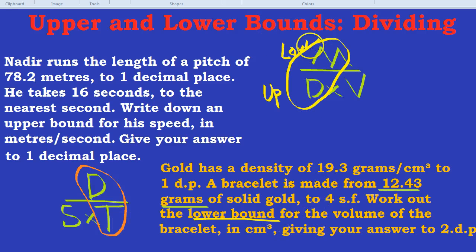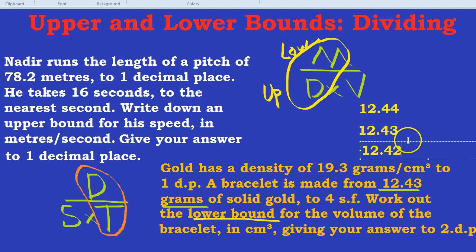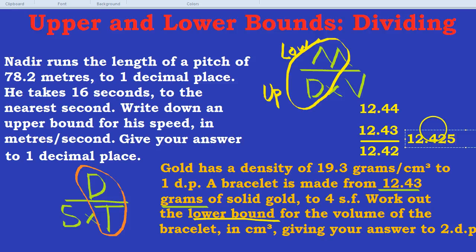Let's do that then. What's the lower bound for the mass of 12.43? Well, there's 12.43. What's one above that? 12.44. One below that? 12.42. We're looking for the lower bound, so we go halfway between the bottom two. And because we know it's going to end in 5, we can see it's going to be 12.425, halfway between the 30 and 20. That is the grams of gold.